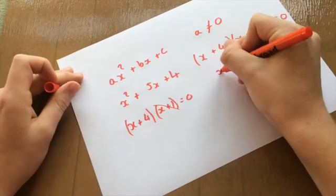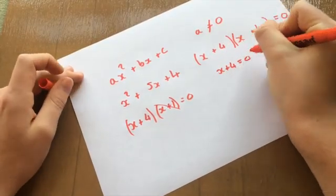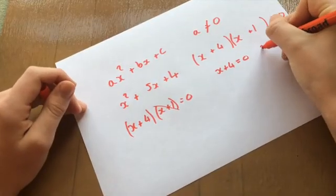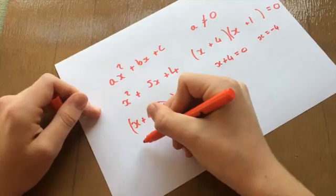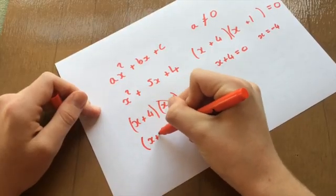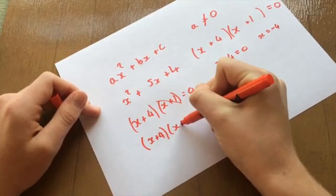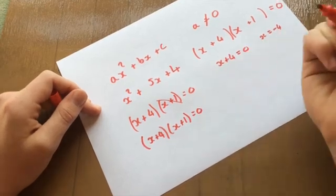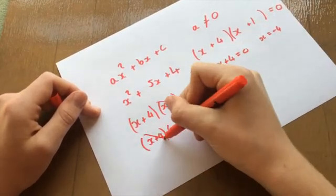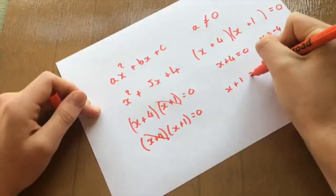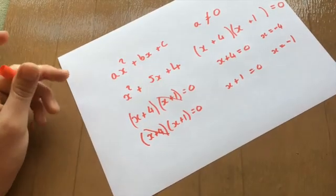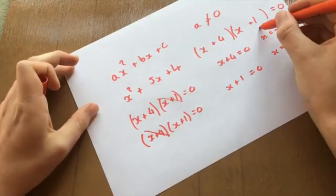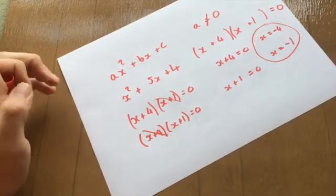So that would leave you with x plus 4 equals 0. And then you can see that x equals minus 4. However, you can do it the opposite way as well. So you can go x plus 4, x plus 1, equals 0. And that way, you can divide by the other brackets. So you can cancel this one out. So then you're left with x plus 1 equals 0. And then you can see that x also equals minus 1. So with quadratics, you always come out with two x-intercepts like this.